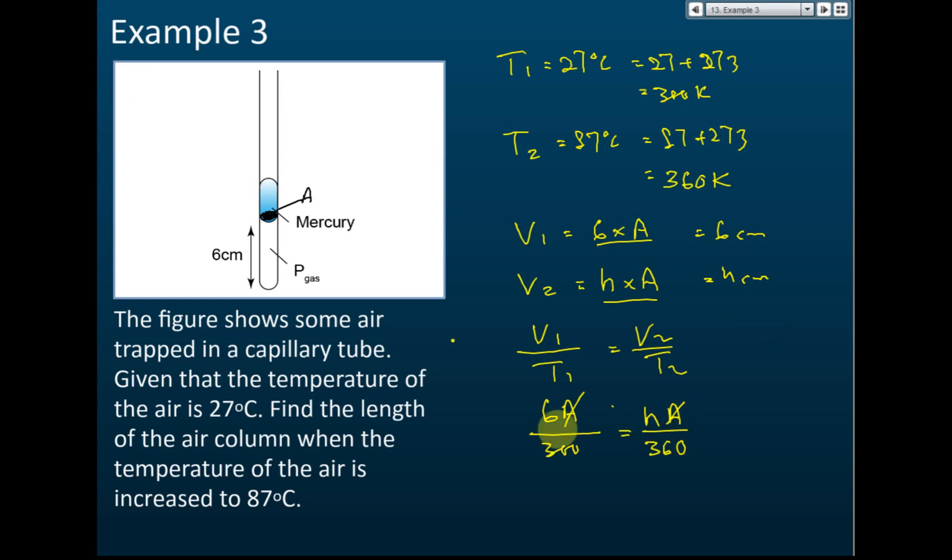So for V1 and V2 we can straight away use 6 cm and h cm. From here, we can find h: h equals 360 multiplied by 6 divided by 300, which is equal to 7.2 cm.